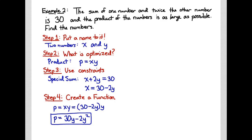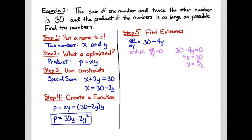Step five is to find the extremes of our function by taking the derivative. We're looking for critical points. The derivative of 30y is 30, and the derivative of 2y squared is 4y. My derivative of p with respect to y is 30 minus 4y. We set that formula equal to zero and solve for y, and I get y equals fifteen halves.